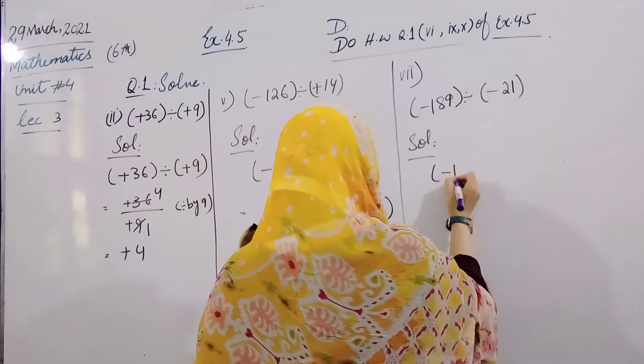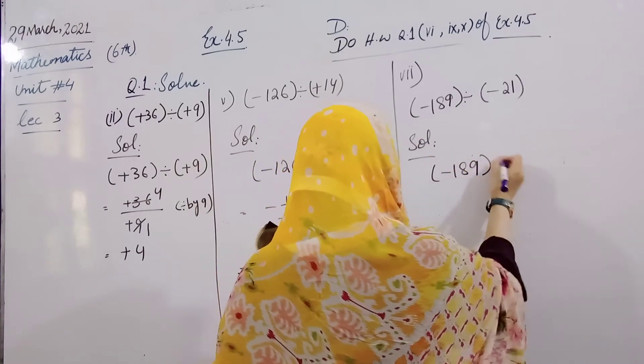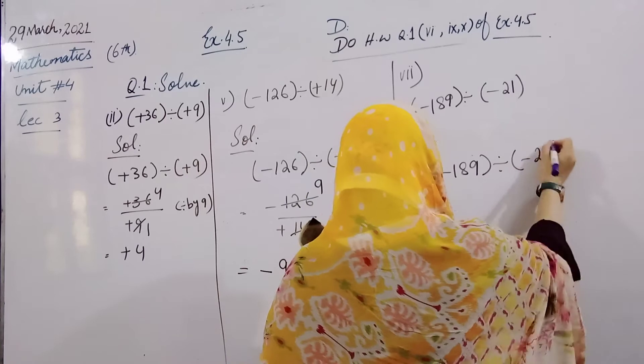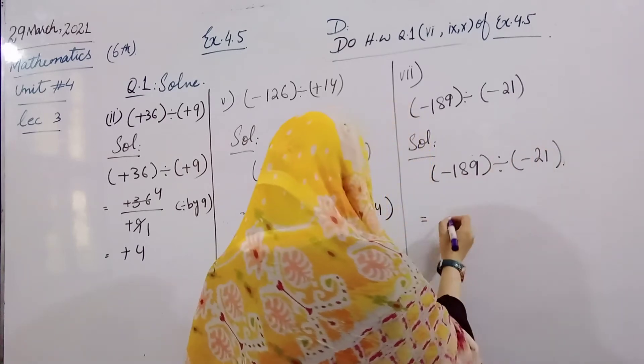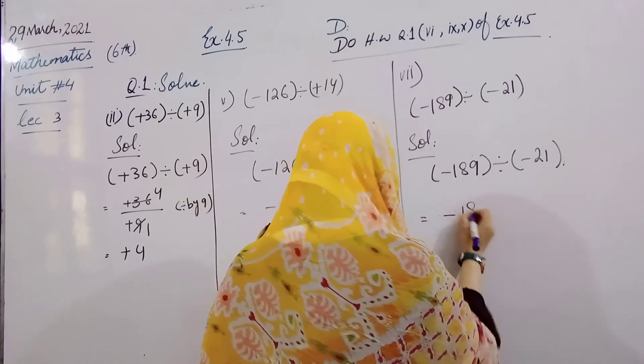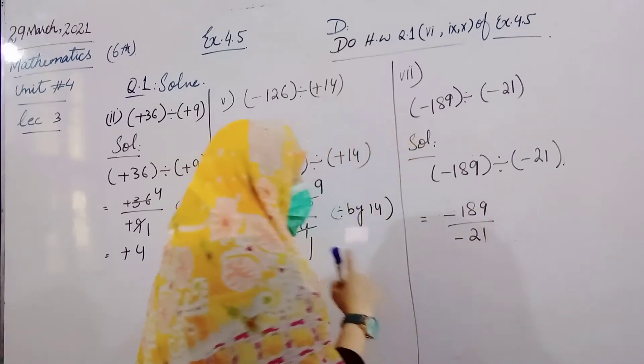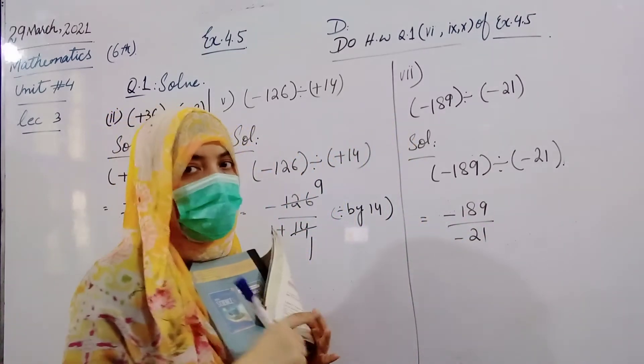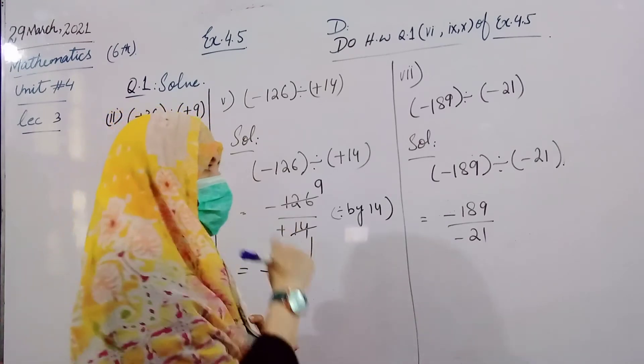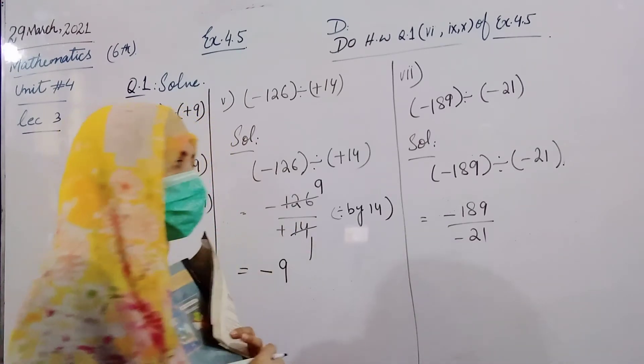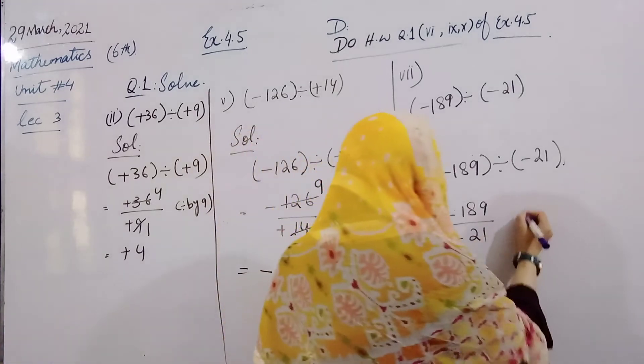Minus 189, we will rewrite. Minus 21. Okay, now minus 189 divided by minus 21. 7 table: 7 times 3 is 21 and 7 is 189. 189 divided by 7.